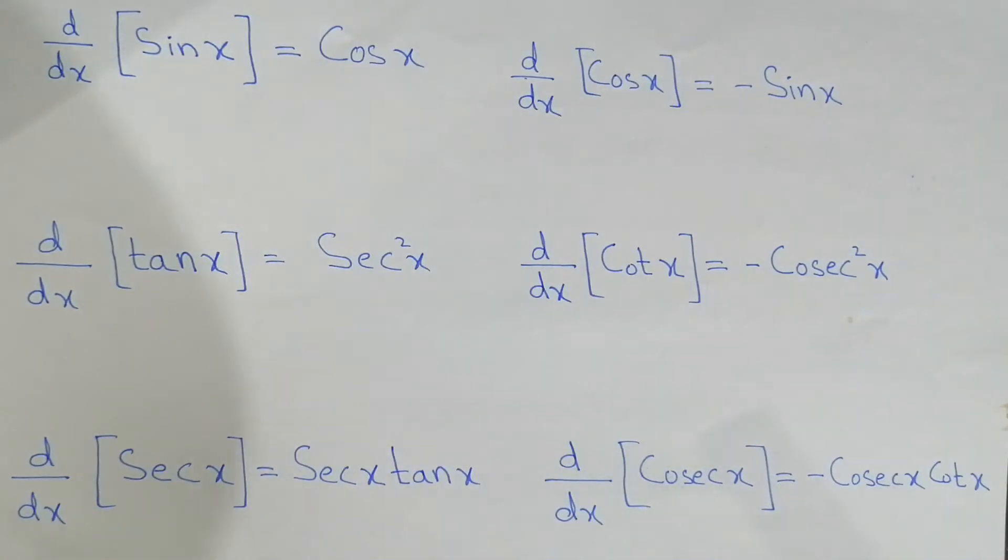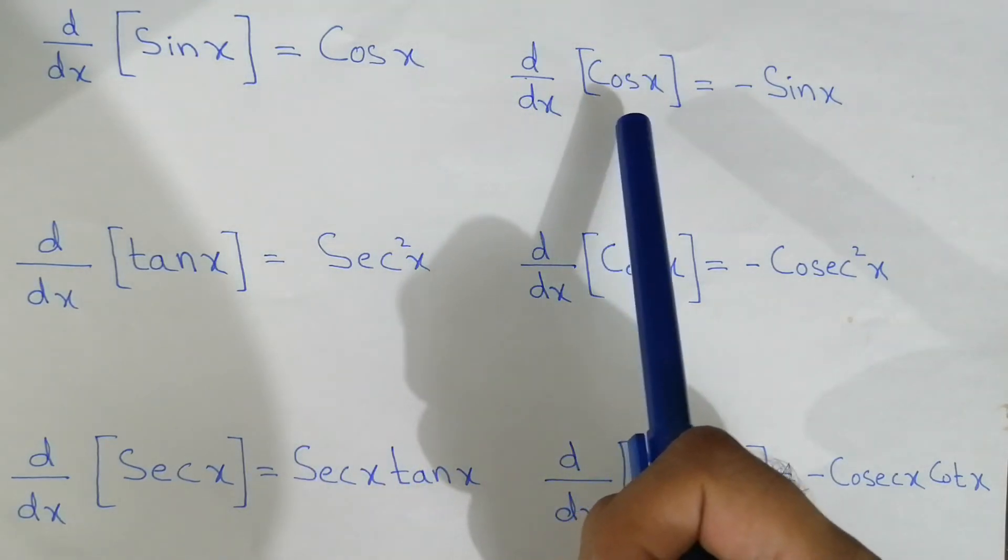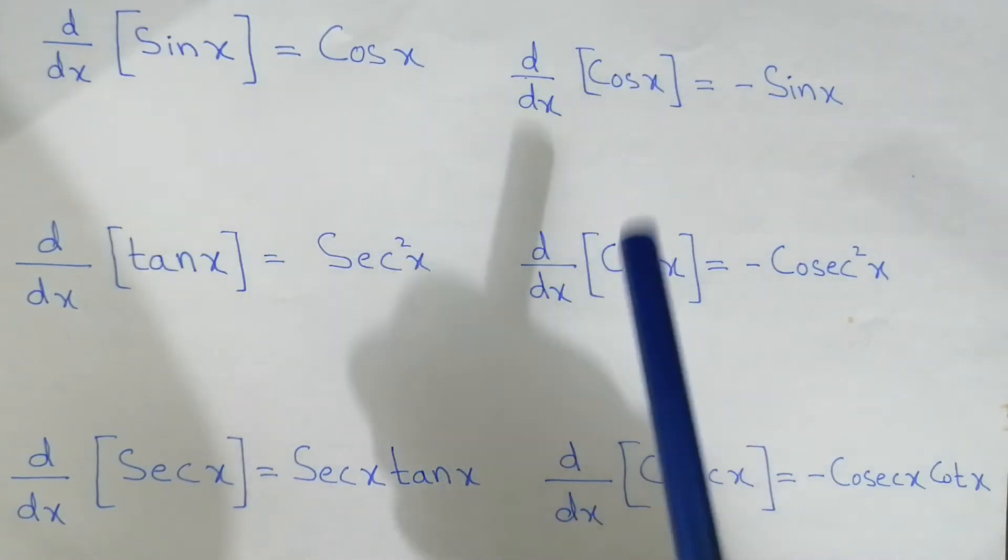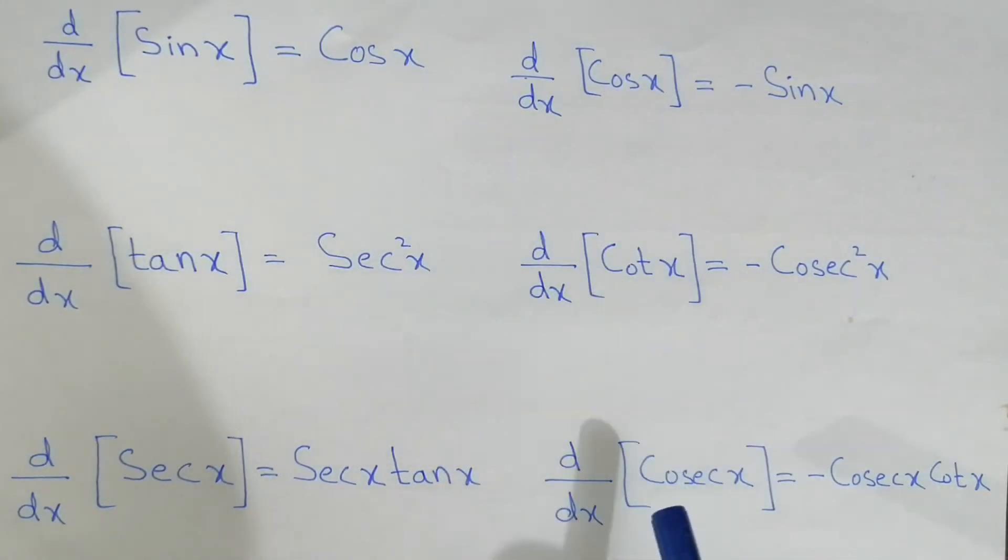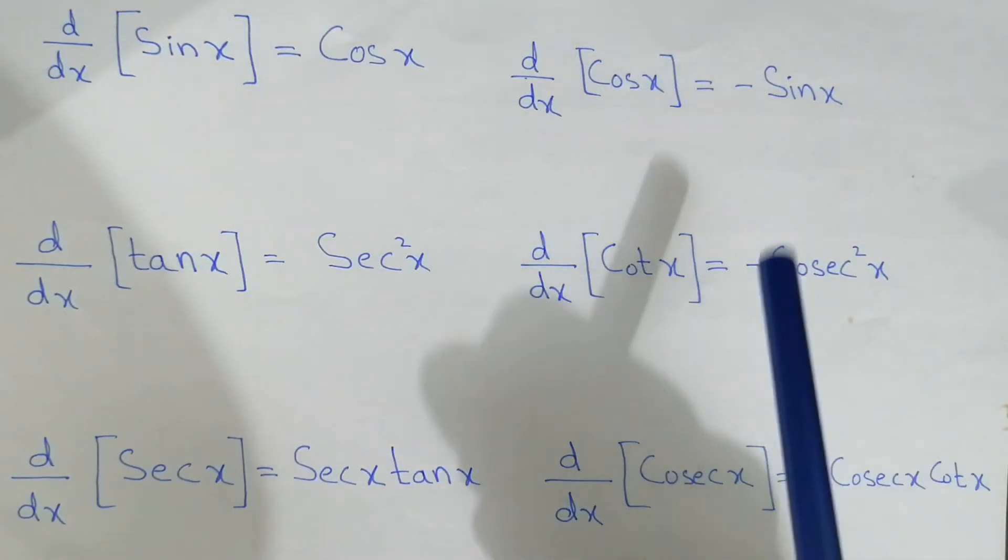Now notice one thing over here: the functions that are starting with cosine - like here we have starting with co, and here also starting with co, and here also starting with co - their derivatives always start with the negative sign.